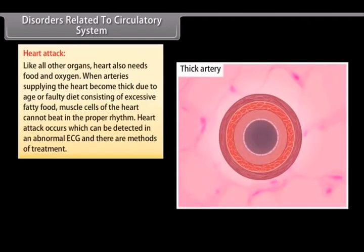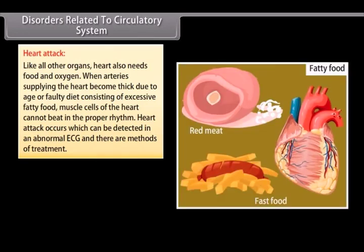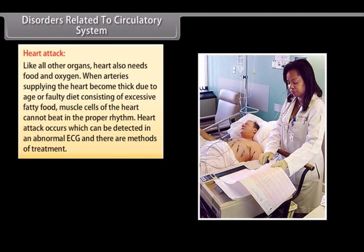Disorders related to circulatory system. Heart attack. Like all other organs, heart also needs food and oxygen. When arteries supplying the heart become thick due to age or faulty diet consisting of excessive fatty food, muscle cells of the heart cannot beat in the proper rhythm. Heart attack occurs which can be detected in an abnormal ECG and there are methods of treatment.